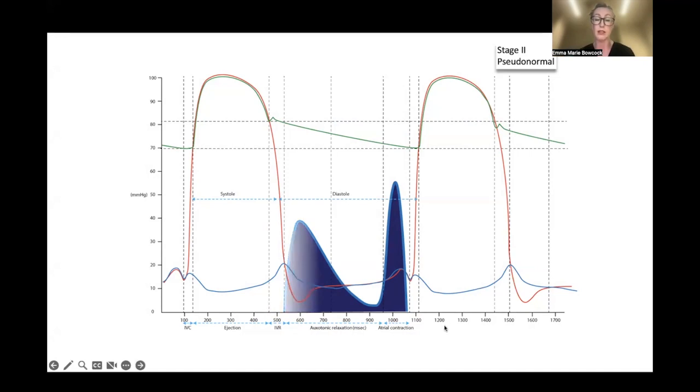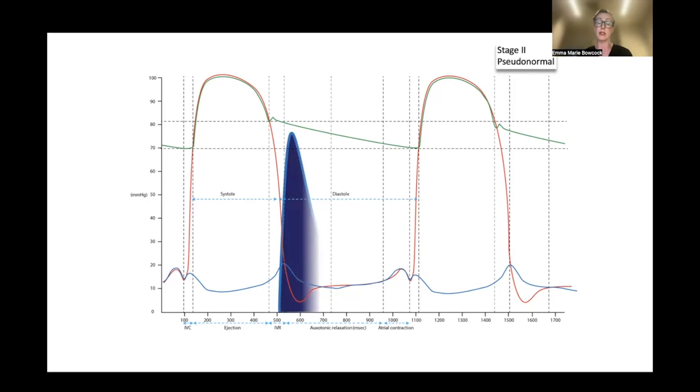Moving from impaired relaxation or stage 1 to grade 2 diastolic dysfunction, what starts to happen is we have this stiff left ventricle. We've got reduced compliance in our left ventricle, and therefore the gradient between our left ventricle and left atrium increases further, so we get a taller E-wave. Because we haven't developed atrial systolic failure just yet, we're still able to get a reasonable A-wave contraction.